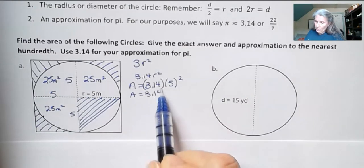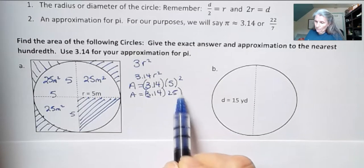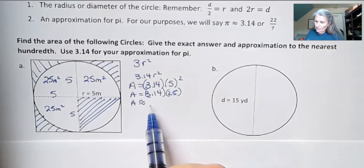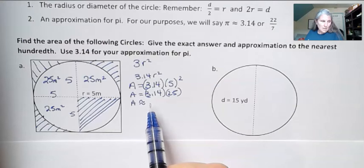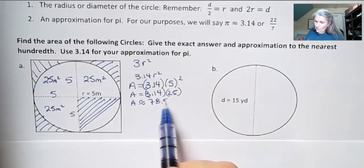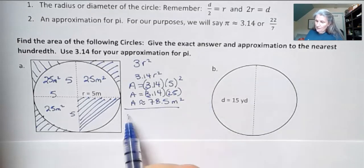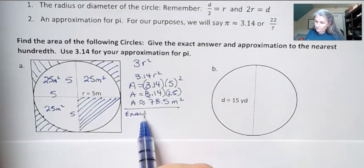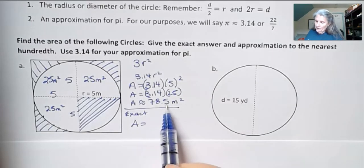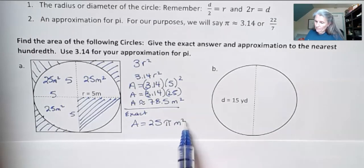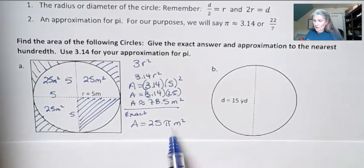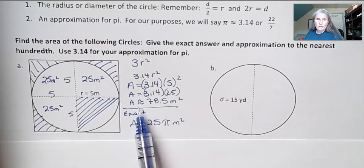Let's do the next step here. 5 squared is 25. And then if we multiply that out, I'm going to say it's approximately, because it's not exact, 78.5 meters squared. The exact answer would be 25 pi meters squared. Because this is the r squared, I didn't approximate pi. I'm saying exactly, I'm going to leave the pi in for the exact answer. The other one is our approximation.